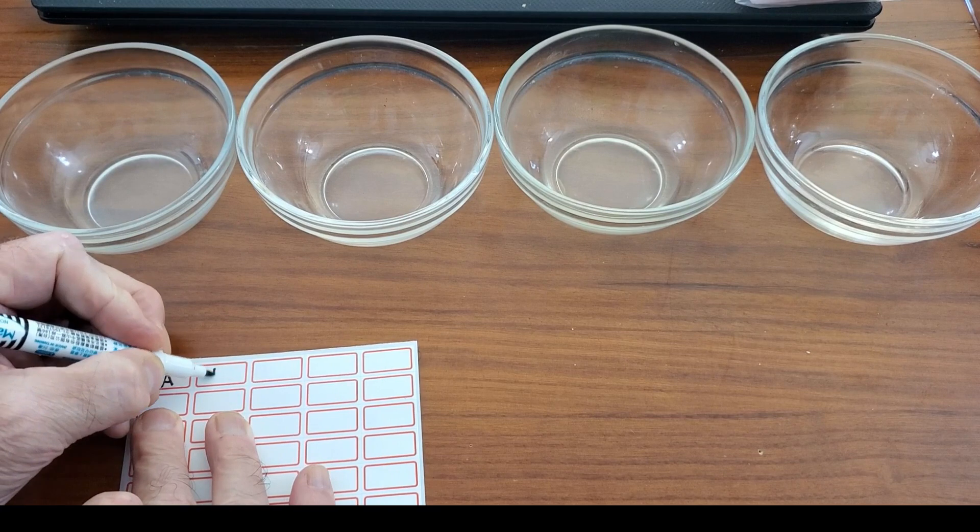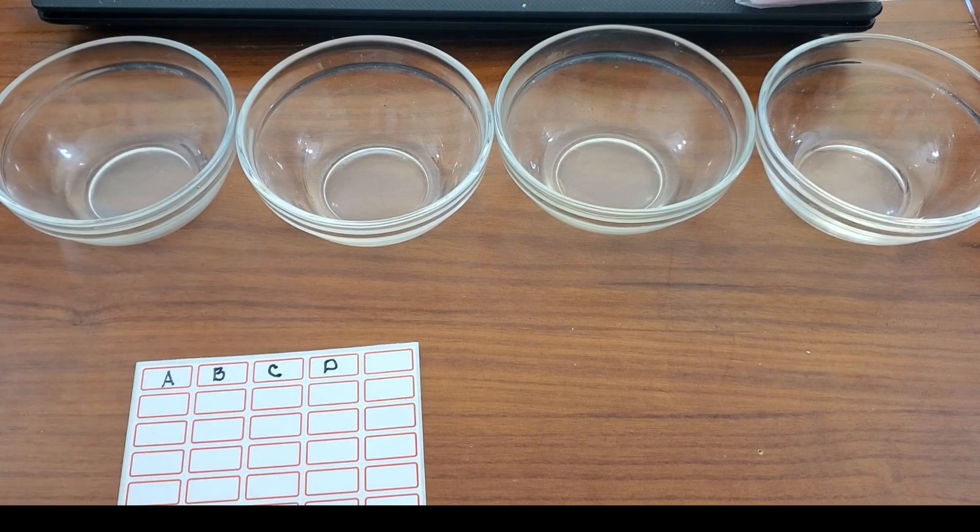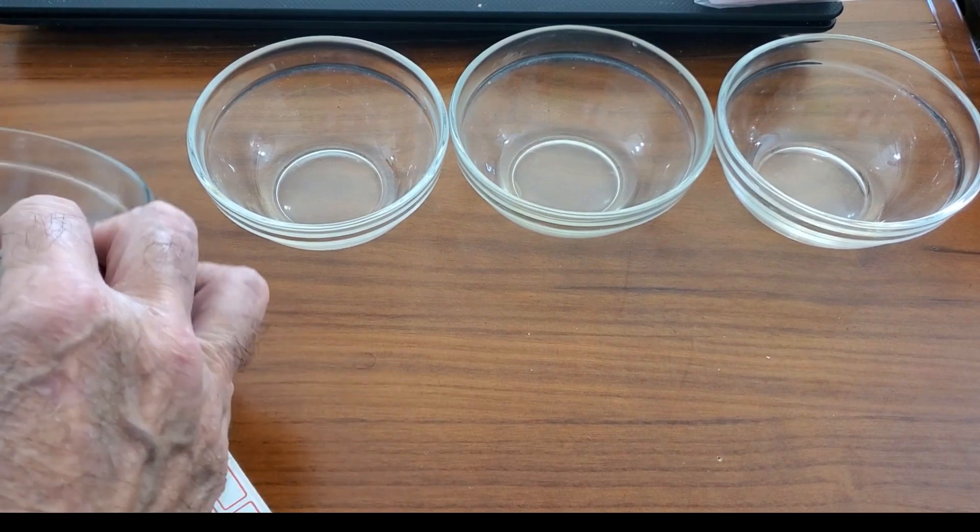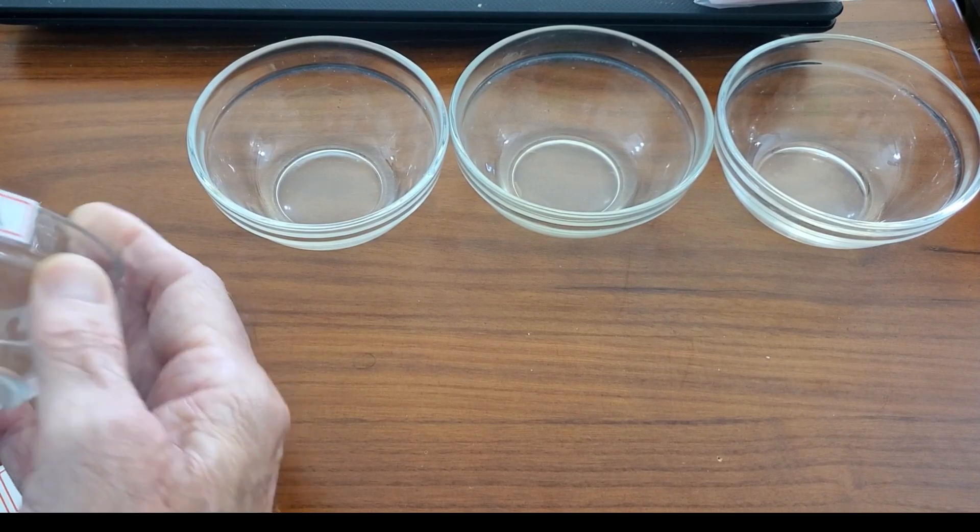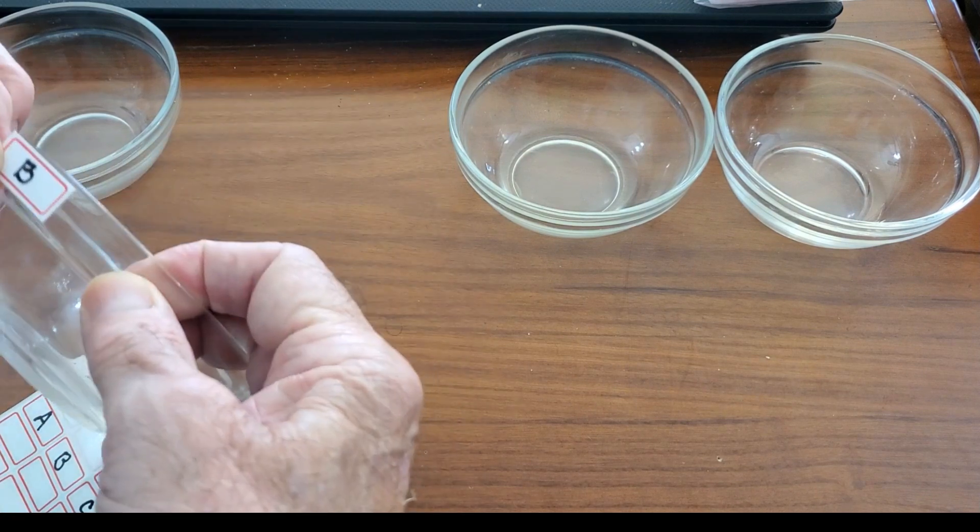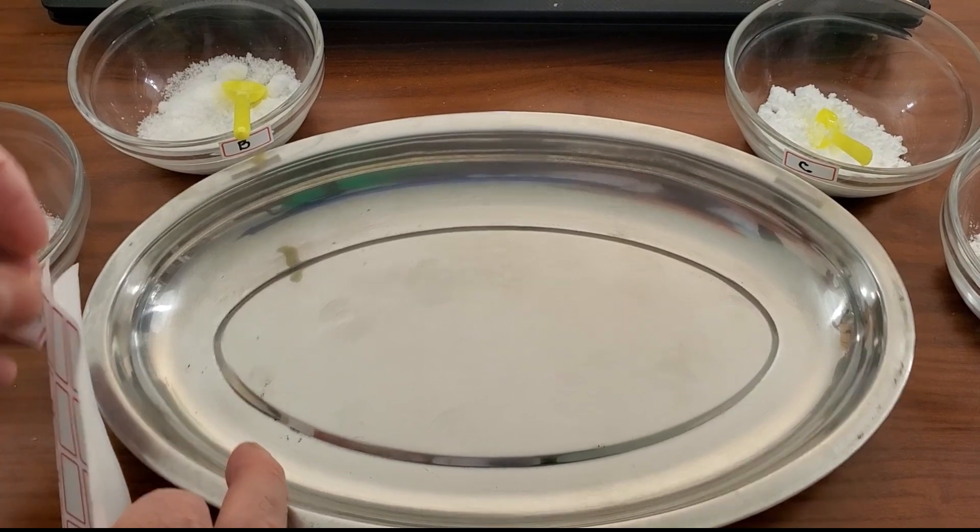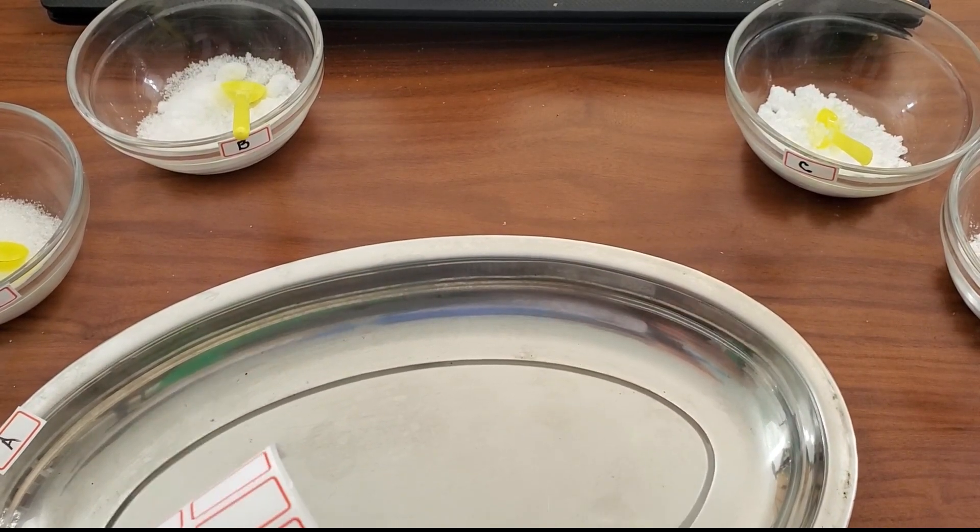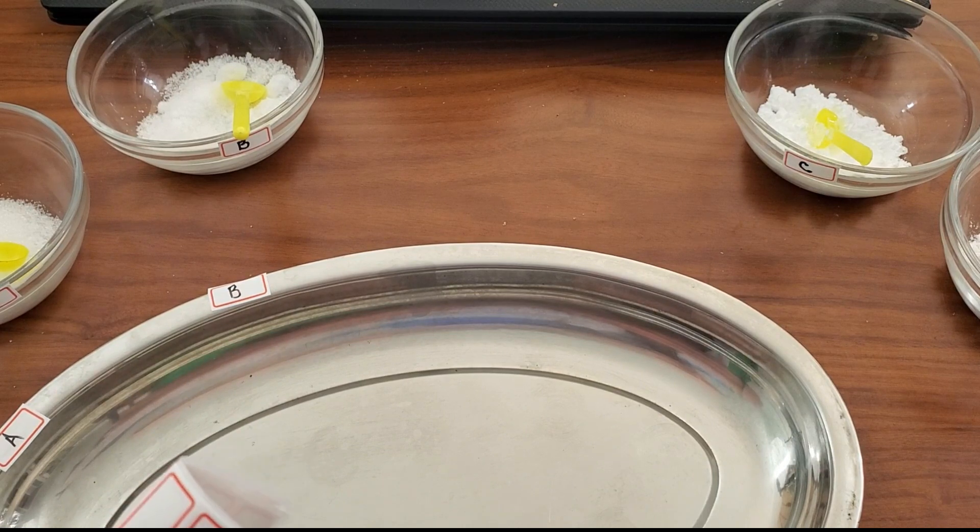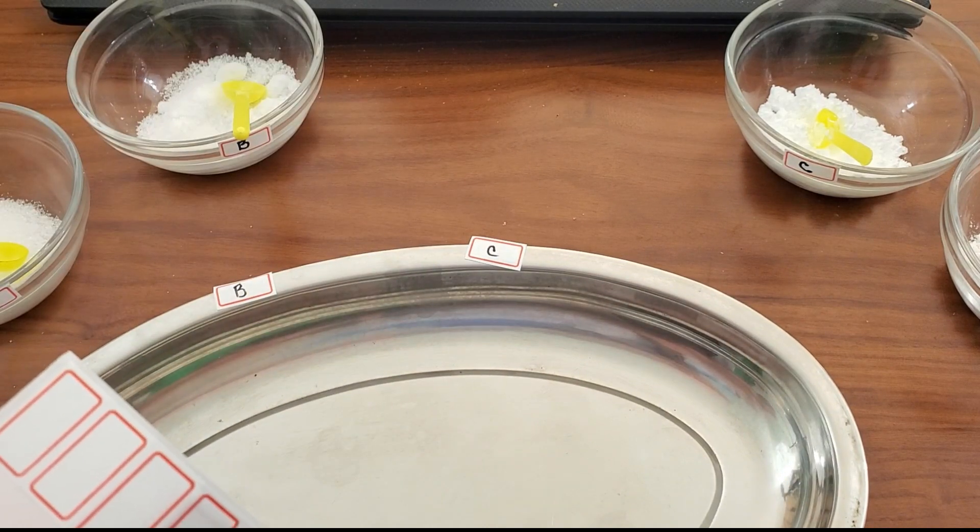The first thing is to label the containers and I do two sets, even three. One for the dish that I work out of and I put one on the tray where I work. I also put a third set on the actual substances and notice there's spoons in each container because I don't want to contaminate each substance. I want to keep that very pure.